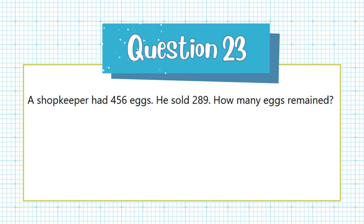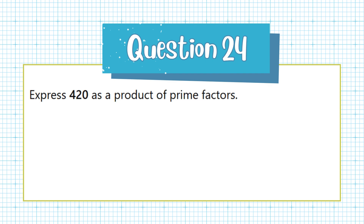Question 23. A shopkeeper had 456 eggs. He sold 289. How many eggs remained? Question 24. Express 420 as a product of prime factors.